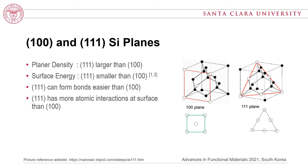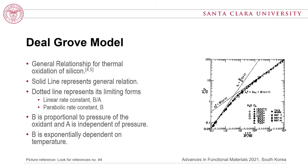Now let's look at the mechanisms of oxide growth, related to silicon planes. Deal and Grove presented a successful mathematical model on thermal oxidation of silicon. Their model conveys that growth takes place with two key mathematical behaviors, which are linear and parabolic.